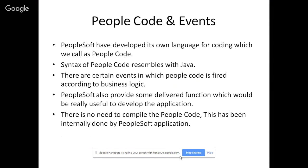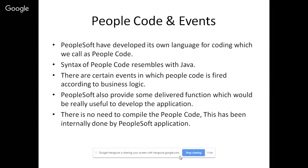Application Engine is the most important topic of this class. It is basically used to develop batch processes. For example, salary crediting on the last day of the month — it's not like someone is manually sending salaries one by one. You schedule this process for the last day of the month and every last day it will run, take details, and process them. You can write PeopleCode, SQL, constructs, for loops, and while loops all in a single place. Every organization will have this. You can also create jobs, which are collections of your processes.